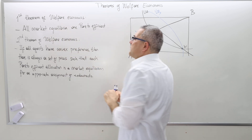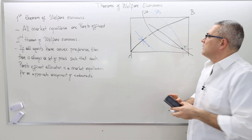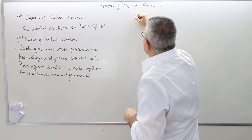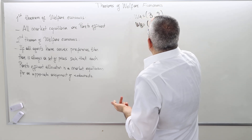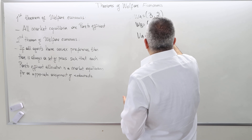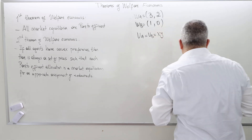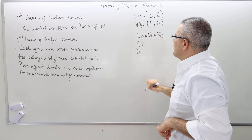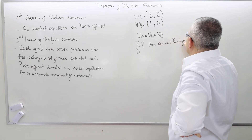Let's go back to the first theorem: are all equilibria really Pareto-efficient? I want to solve a numerical example. Agent A has 3 units of good 1 and 2 units of good 2. Agent B has 1 unit of good 1 and 0 of good 2. Both agents have the same utility function U = X × Y. I want to find the Walrasian equilibrium price ratio and then show the outcome is Pareto-efficient.